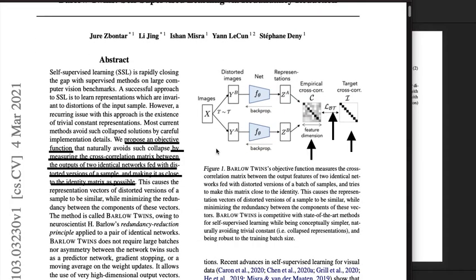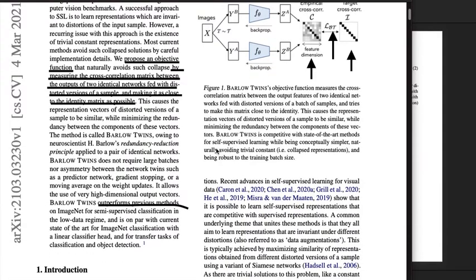The abstract reads that they're going to propose an objective function by measuring the cross-correlation matrix between the outputs of two identical networks fed with distorted versions of a sample and making it as close to the identity matrix as possible, and the result is outperformance on previous methods.